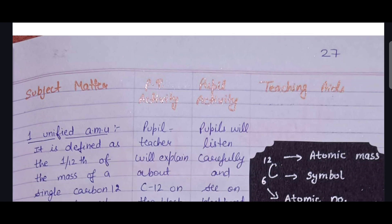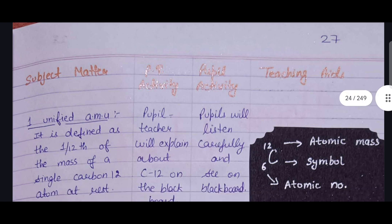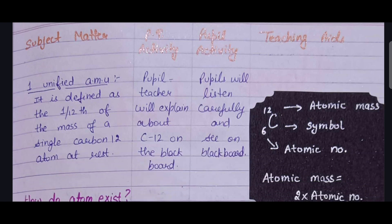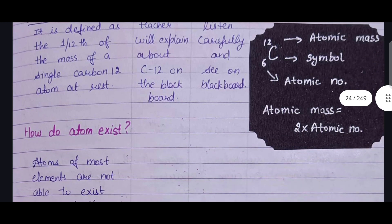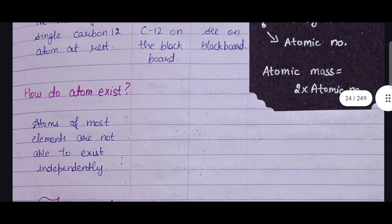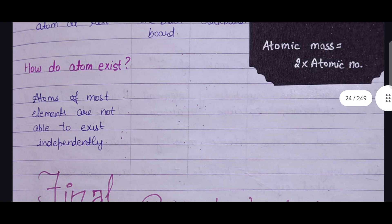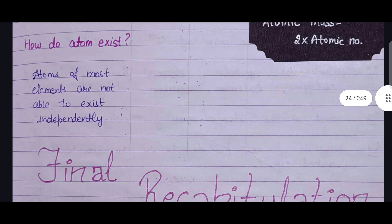The next subject matter is one unified atomic mass unit (AMU) and its definition. The pupil teacher will explain about C-12 on the blackboard, and students will listen carefully. The teaching aid is blackboard work. Then the next topic is how atoms exist, with some explanation, and then the final recapitulation marks the end of this topic.